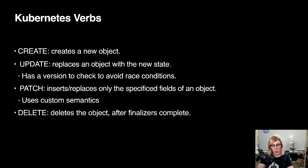We have create and update. They work like you'd expect with a REST CRUD API — either create a new thing that doesn't already exist or replace an object wholesale with a new state. Update has a version check, which is quite helpful. There's a version in the metadata of any existing object, so if you fetch an object, change it in memory, and go to reapply it, the Kubernetes API will warn you if there's a version conflict — if you fetched a different version than what's currently in memory.